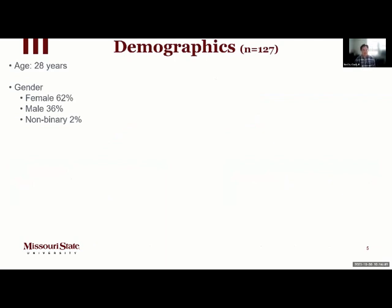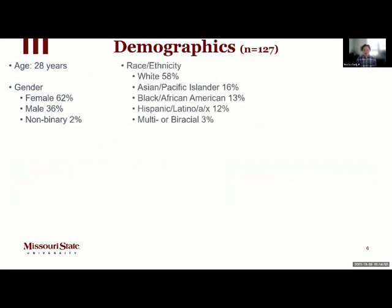Looking at demographics, the average age of participants was 28 years. Gender was mostly female — almost two-thirds — about a third male, and then a handful who didn't fit into binary categories. For race-ethnicity, the majority were white at 58%, but with a good mix of Asian/Pacific Islander, Black/African-American, and Hispanic or Latinx, plus a handful who were multi-racial, multi-ethnic, or biracial.